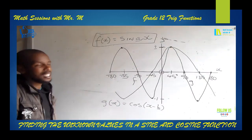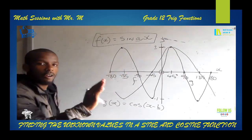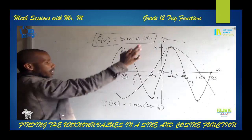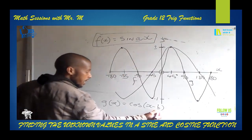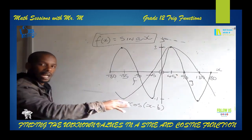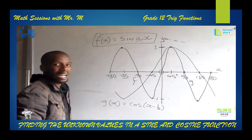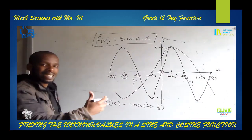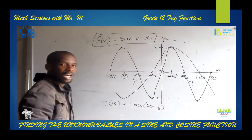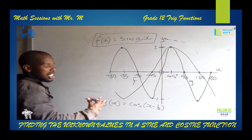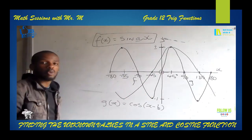A is the coefficient that affects the period of the graph — if you have anything there it affects the period. B is the horizontal shift of the cosine graph, affecting the degrees of the cosine graph whether it moved a certain degree to the right or to the left. The negative sign tells us that it is shifted to the right by a certain degree, and that is what we need to find.